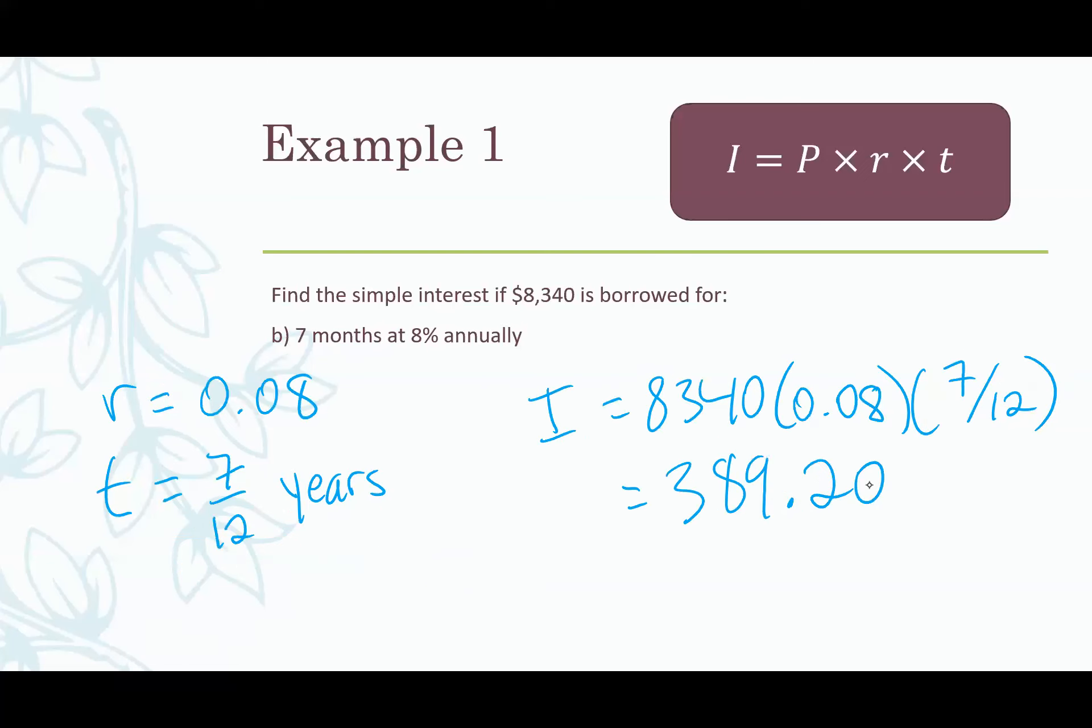Second example here. So with the same original amount $8,340, what if instead it was borrowed for only seven months at 8% annually? Well our P stays the same, $8,340. Our rate is slightly different. Instead of 7.5% it's 8%. So our rate is now 0.08. And the thing that's a bit tricky here is the time.